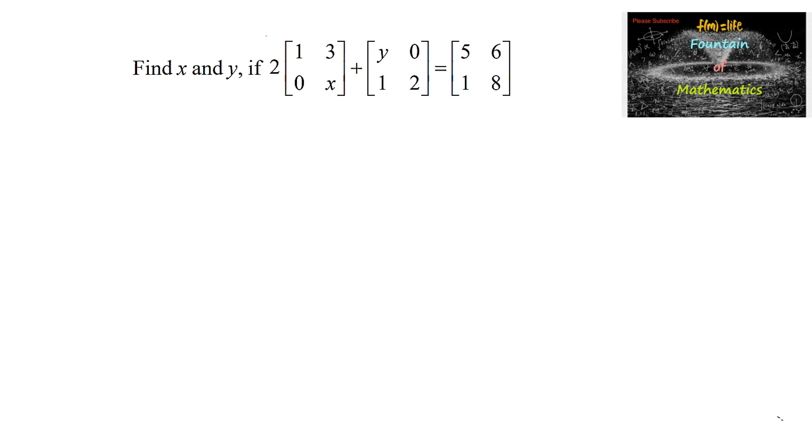Find x and y if 2 times the matrix 1, 3, 0, x plus matrix y, 0, 1, 2 is equal to 5, 6, 1, 8.